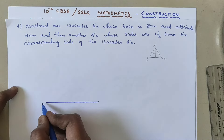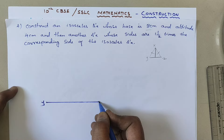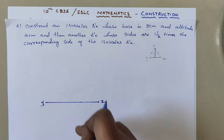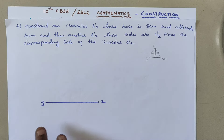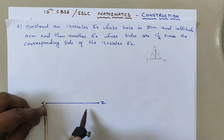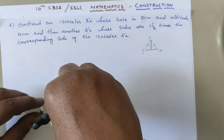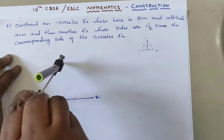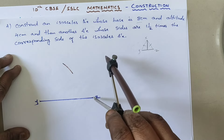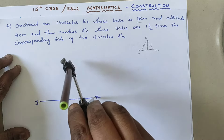Mark the endpoints as Y and Z. Now I should draw the altitude, which is perpendicular to YZ. To do this, take more than half of the line segment on your compass. With the needle on Y, draw arcs above and below the line. Same way, keep your compass needle on Z and cut the arcs.